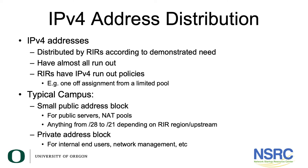How are IPv4 addresses distributed? IPv4 addresses are distributed by regional internet registries according to demonstrated need. All the regional internet registries have almost run out of IPv4 addresses, hence they have put into place run-out policies. An example of this is a one-off assignment from a limited pool. A typical campus will have a small public IP address block, which it would use for its public servers and NAT pools.